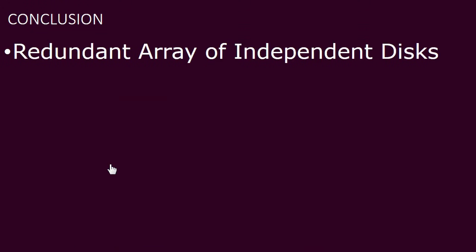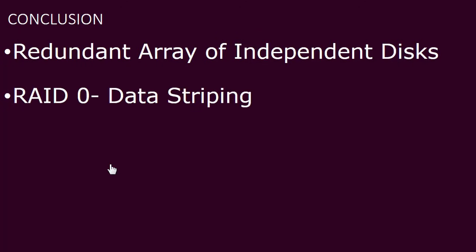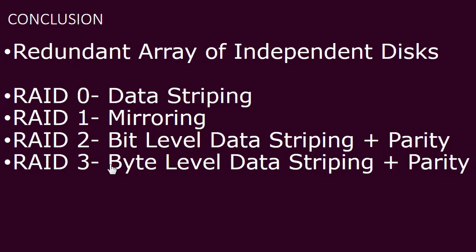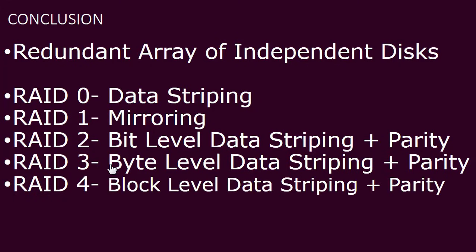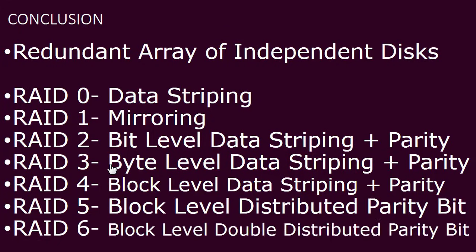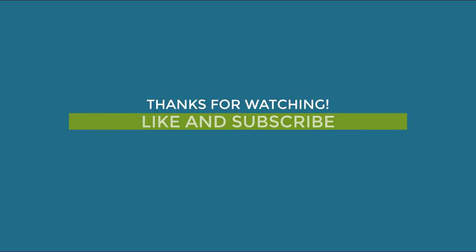To conclude: RAID stands for Redundant Array of Independent Disk. RAID Level 0 uses data striping. RAID Level 1 uses mirroring. RAID Level 2 uses bit-level data striping with parity. RAID Level 3 uses byte-level data striping with parity. RAID Level 4 uses block-level data striping with parity. RAID Level 5 uses block-level distributed parity. RAID Level 6 also uses block-level distributed parity but with double parity bits to recover failure of two hard disks. Thank you for watching.